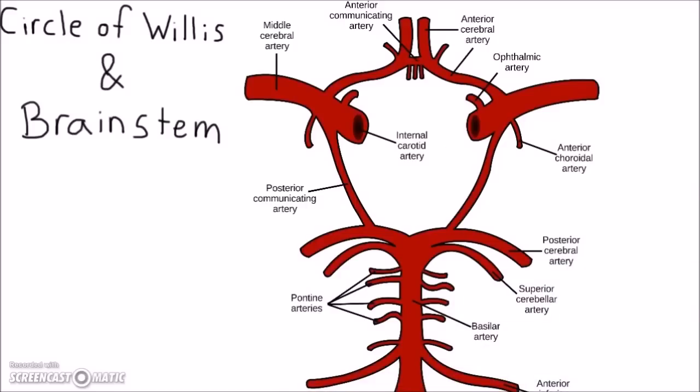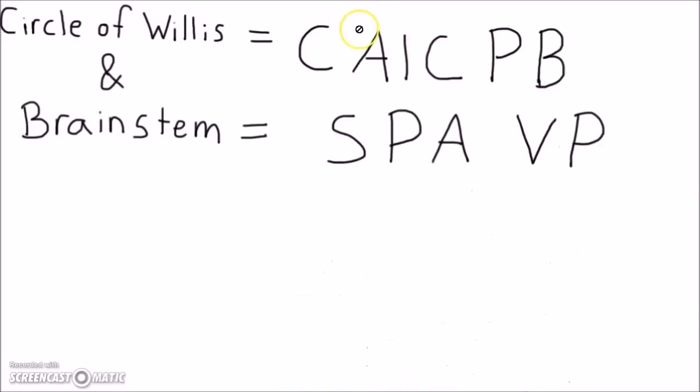The Circle of Willis is an arterial anastomosis visible on the ventral brain. Jumping straight into the mnemonic, it is CAKE PB SPA VP.